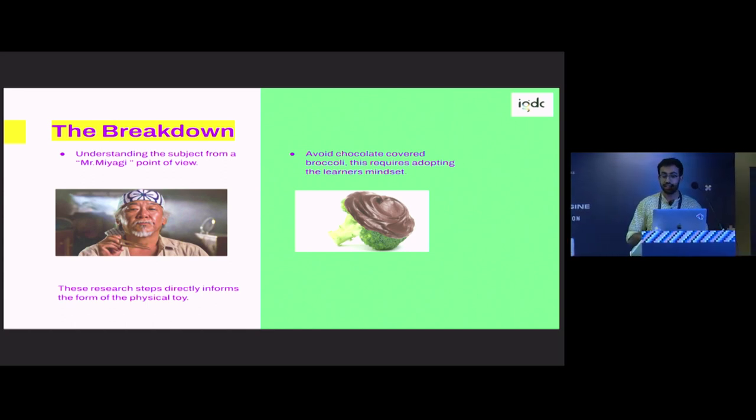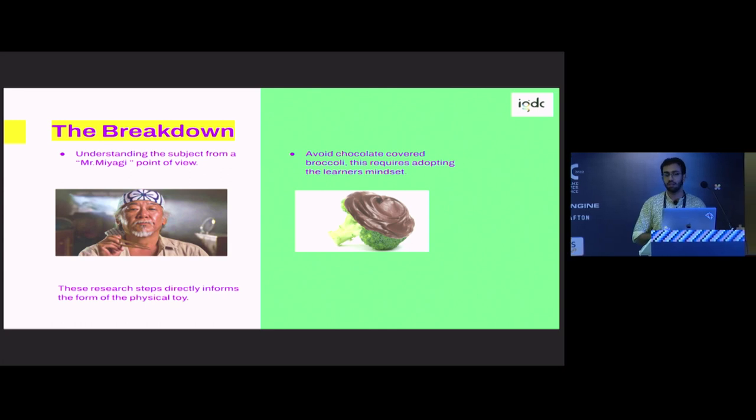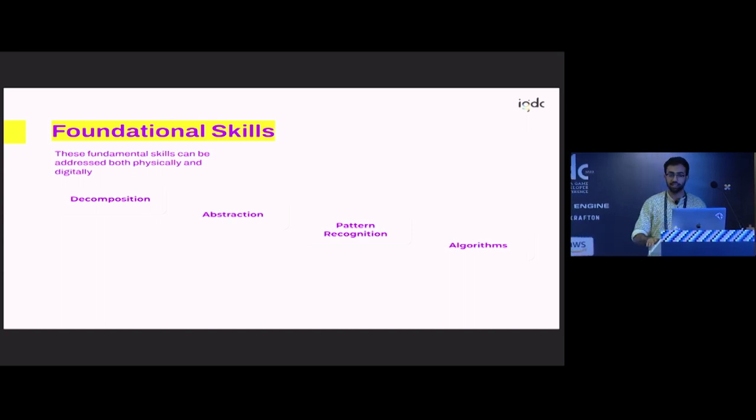One more thing we really take care in edtech games, a very common problem is chocolate covered broccoli. Broccoli is basically your learning content and the chocolate is a very thin layer of the game on top. So it's important to actually mesh these two together. This can be avoided only by truly empathizing with the children and actually breaking down the subject.